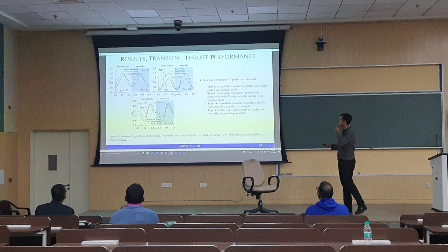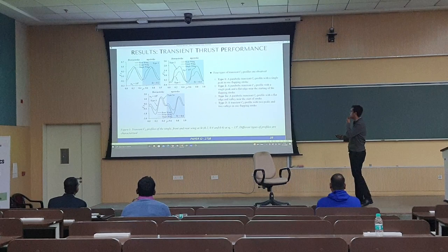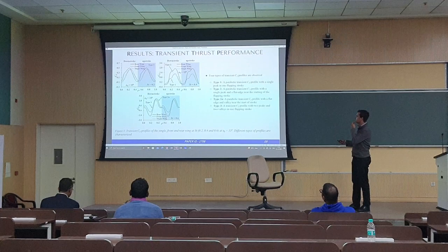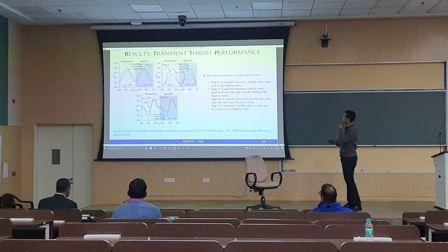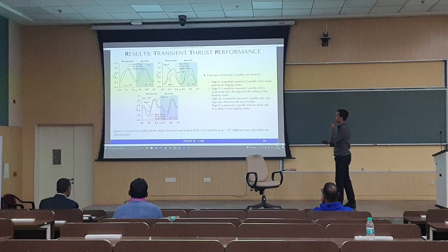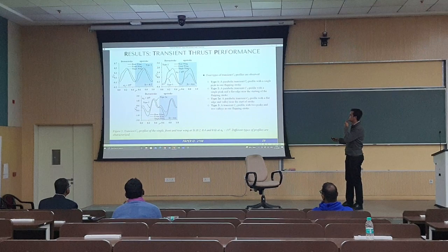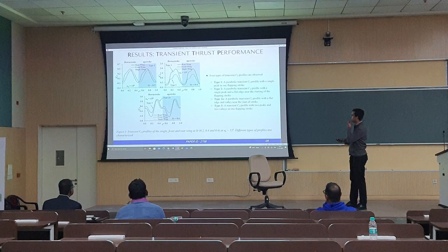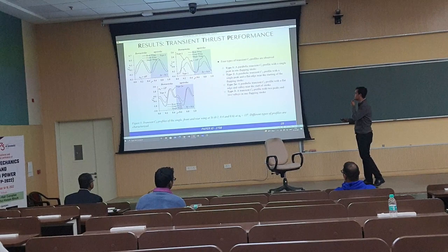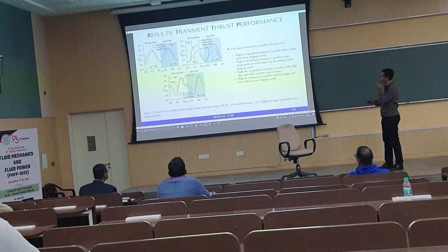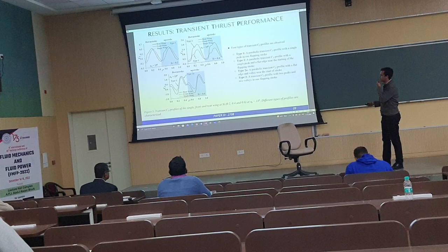As far as transient thrust performance is concerned, we define the wake interactions into four types: type 1, 2, 2a, and 3. At Strouhal number 0.2, the first plot shows no miscellaneous effect due to near wake structures — just one peak showing increase and decrease in a harmonic way, defined as type 1, with just one parabolic transient CT profile. The second profile, at Strouhal 0.4, has another type of interaction appearing only for the rear wing, while the front wing remains type 1. There is a flat edge slightly before and after the start, then a peak, and then the subsequent cycle continues.